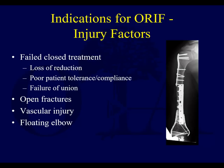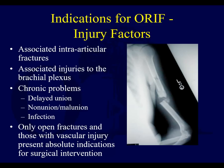Indications for ORIF — the injury factors are: failed closed treatment, loss of reduction, poor patient tolerance or compliance, failure of union with closed treatment, open fractures, vascular injury, a floating elbow (meaning a humerus and a forearm fracture), associated intra-articular fractures such as a distal humerus fracture extending into the shaft, major nerve injury like brachial plexopathy, and other chronic problems like nonunion or delayed union. Out of these, only open fractures and those with vascular injury are absolute indications for surgical intervention.